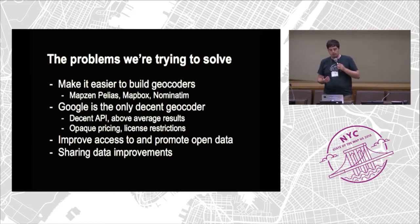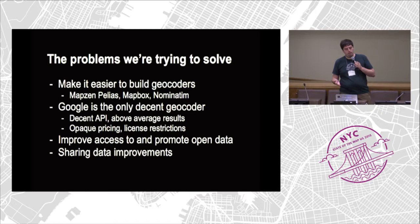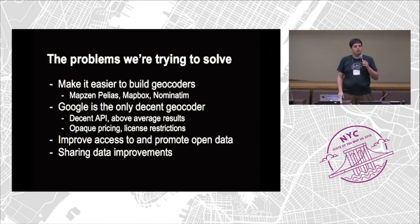There are some existing projects — MapSense, Pelias, MapBox has a geocoder, and Nominatim. They're all really great, they're all open source to some extent. They all work adequately and they all consume an address and spit out some kind of latitude and longitude.